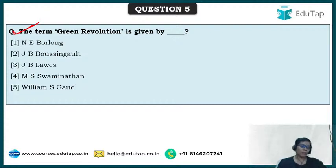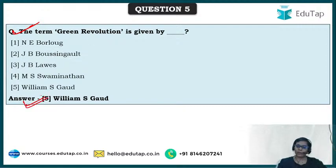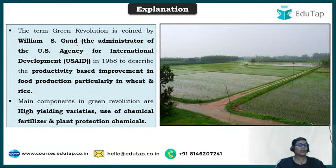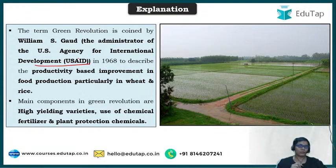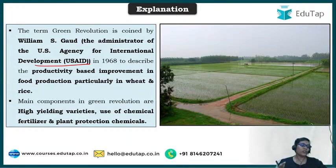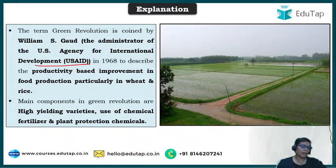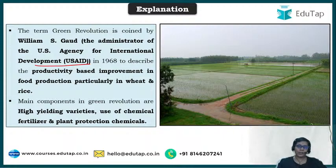The correct answer is William S. Gaud. He was the then administrator of USAID — the U.S. Agency for International Development. In 1968, during a meeting, he described the productivity-based improvement in production, particularly in wheat and rice, and termed it 'green revolution.' Accordingly, this green revolution was later put into place by Norman E. Borlaug. The main components of green revolution were high-yielding varieties, use of fertilizers and plant protection chemicals.